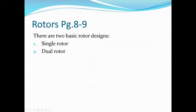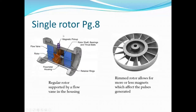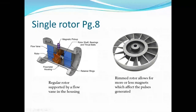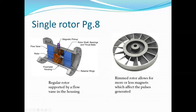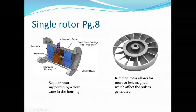Looking at rotors in more detail, there are two basic rotor designs: the single rotor and the dual rotor. The single rotor is supported by stators in the body with bearings. Sometimes the rotor is rimmed — this relates to allowing more or less magnets, which increases or decreases the number of pulses generated. There's a magnetic interaction with a coil generating these pulses, and the rimmed rotor allows adding or removing magnets.